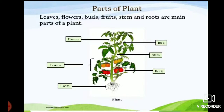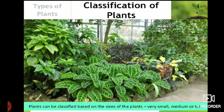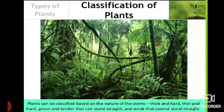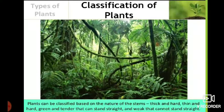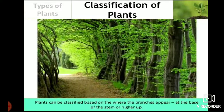Now let us check how we can categorize or classify the plants. Plants can be classified based on the size of the plants — very small, medium, or tall. Plants can also be classified based on the nature of the stems — thick and hard, thin and hard, green and tender that can stand straight, and weak that cannot stand straight. Another characteristic is where the branches appear — at the base of the stem or higher up.